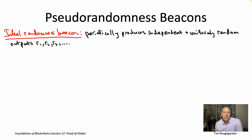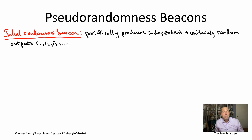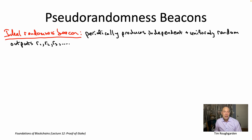The output of the beacon is from some known set — maybe the set of all 256-bit strings. Throughout part two of lecture 12, we've seen why access to such a beacon is useful to a blockchain protocol, specifically a proof-of-stake protocol that wants to sample one public key out of all the public keys registered in a staking contract, with probability proportional to the stake.